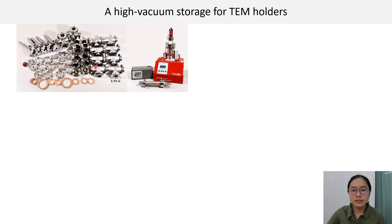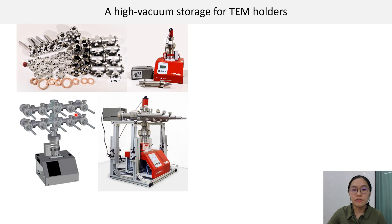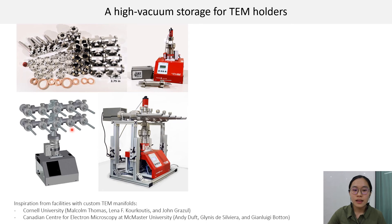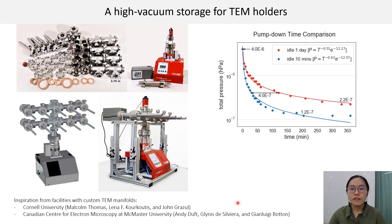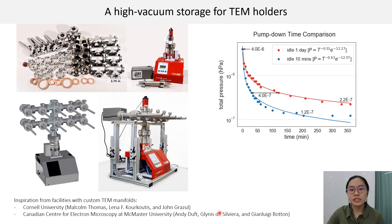The key components of the high vacuum manifold are an RGA, a turbo-molecular pumping station, and a total pressure gauge. The total number of holder ports can be customised to suit a facility's need. We would like to recognise inspiration from facilities with custom TEM manifolds, such as Cornell University and the Canadian Centre for Electron Microscopy. On top of their design, we added the RGA, which allowed us to assess residual gas levels specifically.